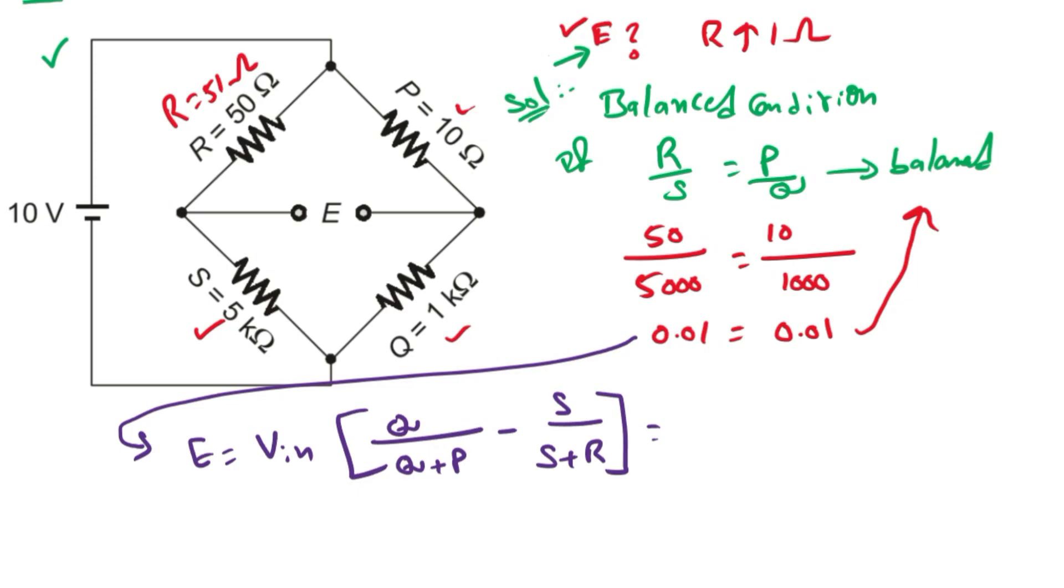Then we will get the V input already given in the question, that is 10 volts. So 10 into Q already given 1000 ohms, that divided by 1000 plus P already given 10.